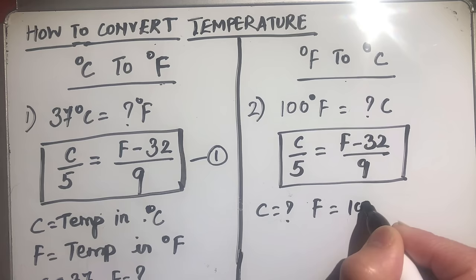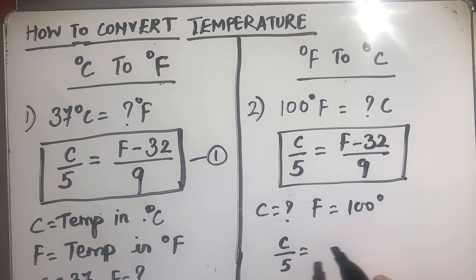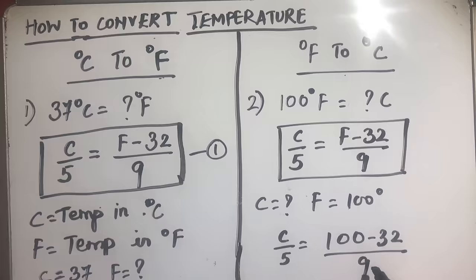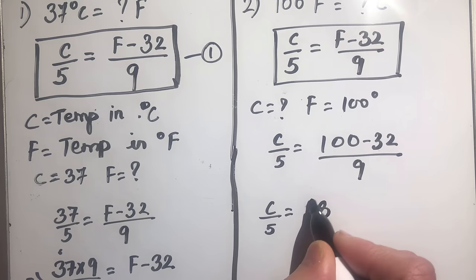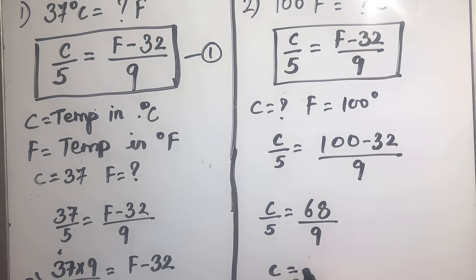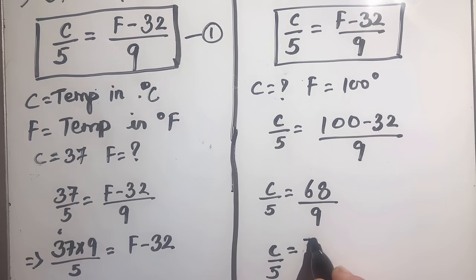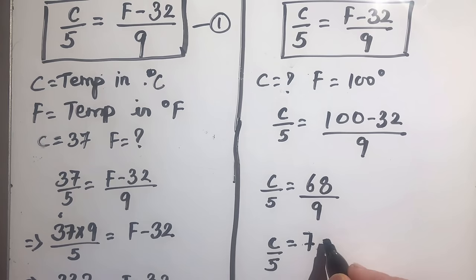Now we will put the values in. So C over 5 is equal to 100 minus 32 over 9. That gives us C over 5 equal to 68 over 9, which is 7.55.